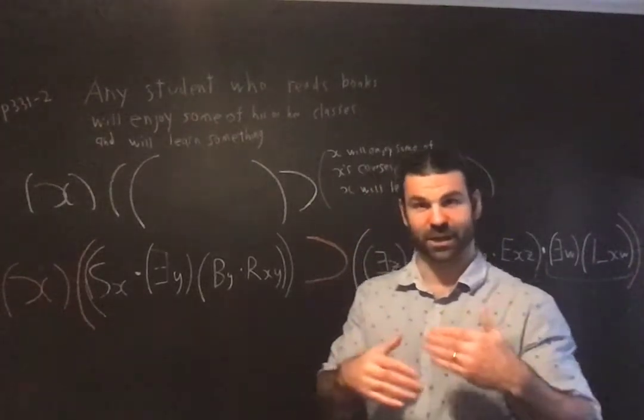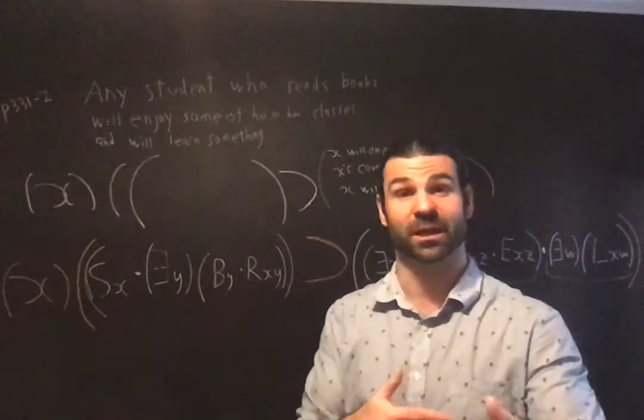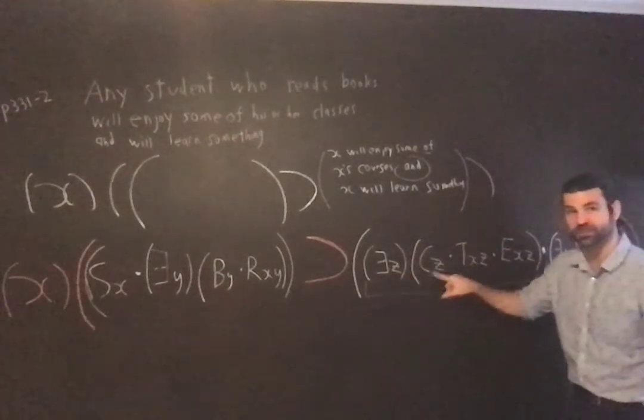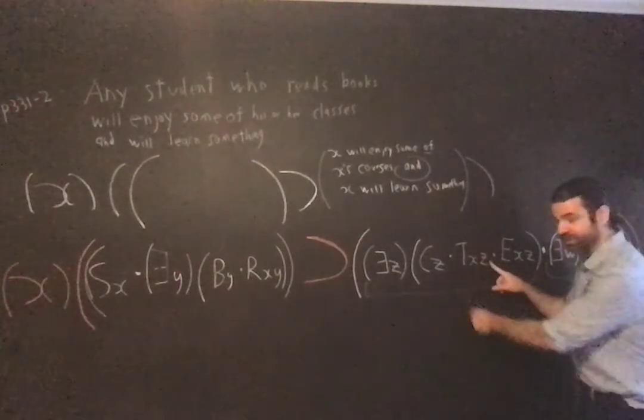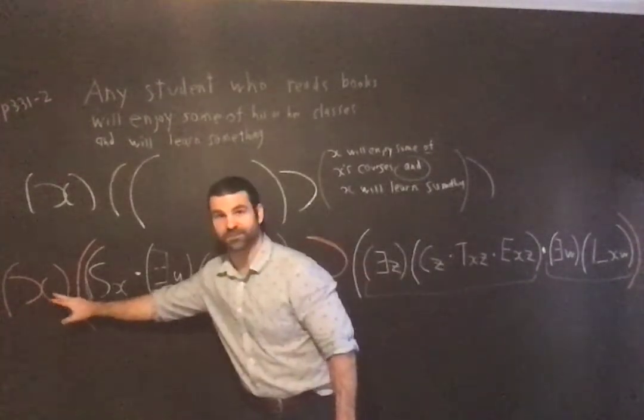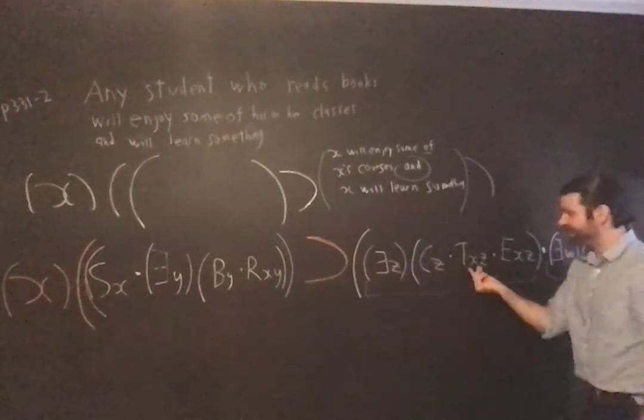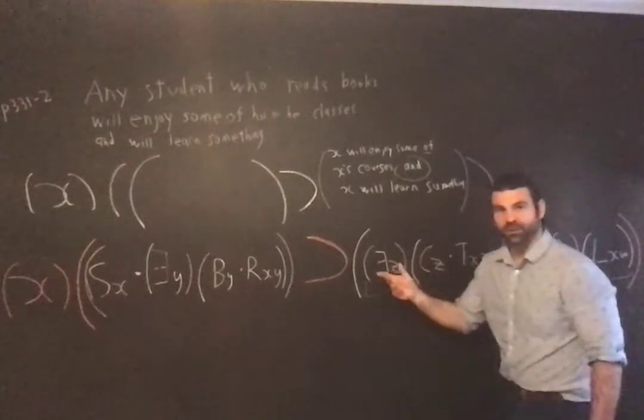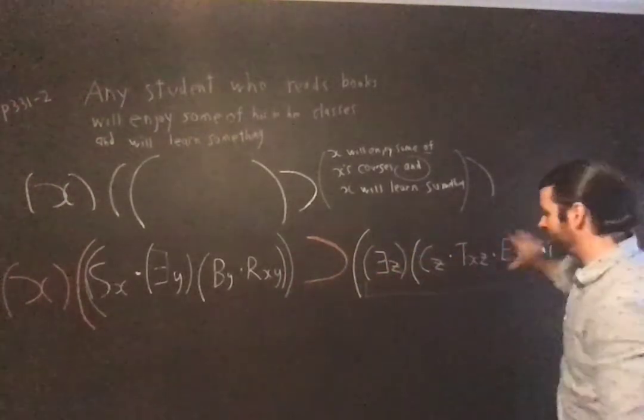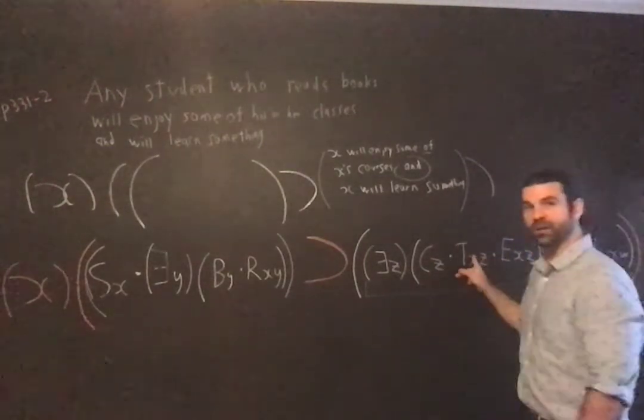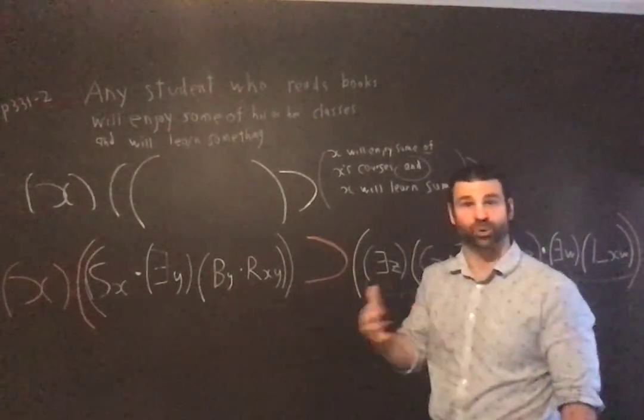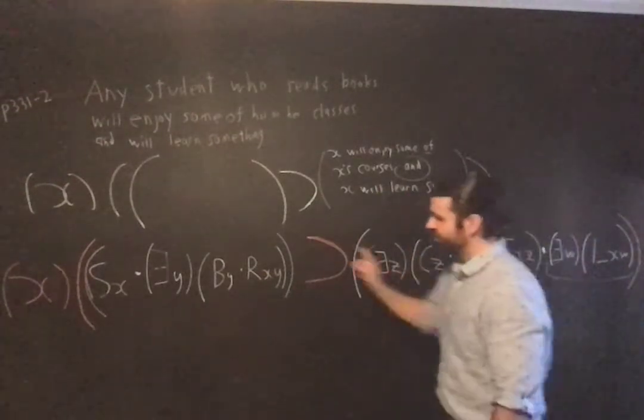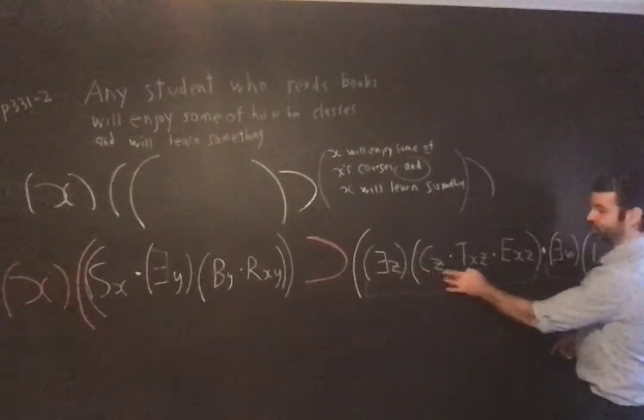Right, that there's things standing in the relation of taking, the student, the student stands in the taking relation to something, and that something is their courses, right, enjoys their courses. So we have to say there exists a Z such that Z is a course, and X is taking Z. Notice that this X is, right, is for all X's, for every single X, if X is a student and X reads books, so this X is referring to the student who reads books. Right, it's like the, again, scope of the quantifier, the quantifier binds, binds everything, way over here.